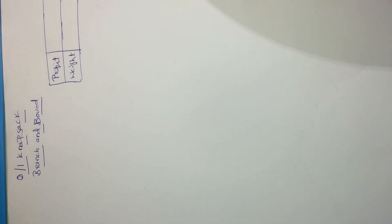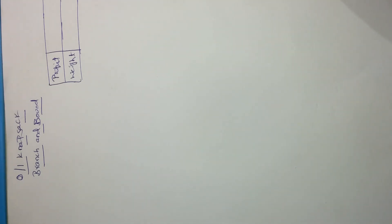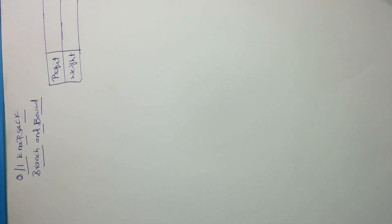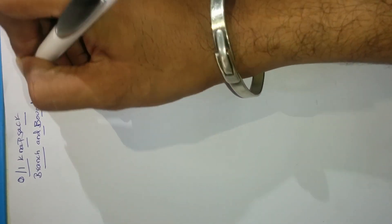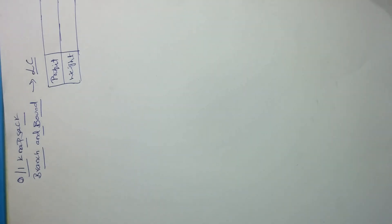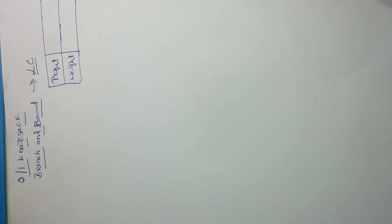Hello everyone, today I am going to discuss a concept called the zero-one knapsack problem. We already discussed this knapsack problem using greedy method and dynamic programming method, but today I am going to explain it using branch and bound method. There are three methods: FIFO method, LIFO method, and LC (least cost) method. Today I am going to explain how to solve using the least cost branch and bound method.